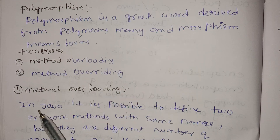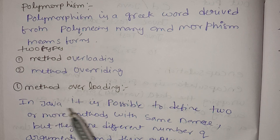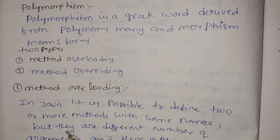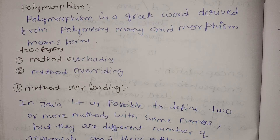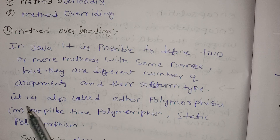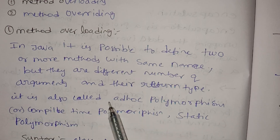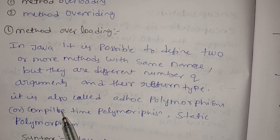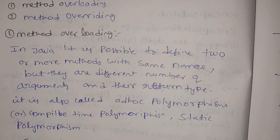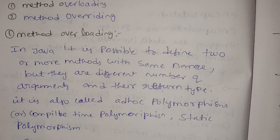The two types are method overloading and method overriding. Method overloading in Java means it is possible to define two or more methods with the same name but they are different in number of arguments and their return type. It is also known as ad-hoc polymorphism, compile-time polymorphism, and static polymorphism. Same method name, but different return types and arguments.